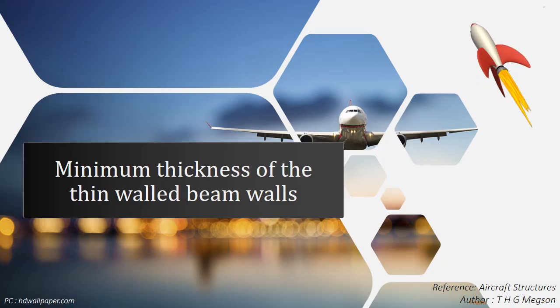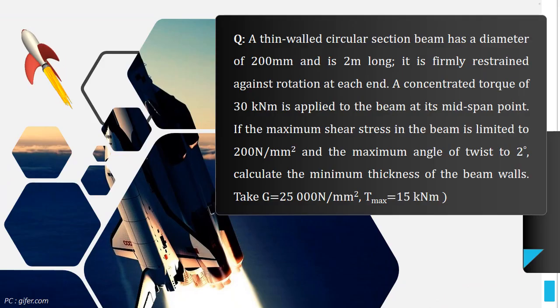Now, we are going to learn how to find the minimum thickness of the beam walls. Consider a thin wall circular section beam has a diameter of 200 mm and is 2 m long. It is firmly restrained against rotation at each end. A concentrated torque of 30 kNm is applied to the beam at its mid-span point.